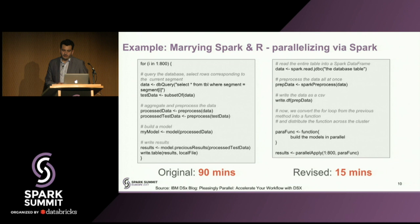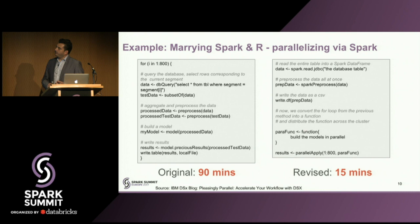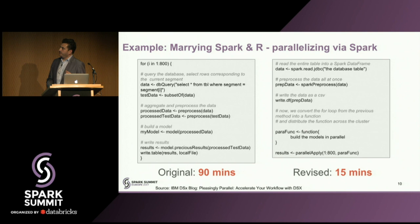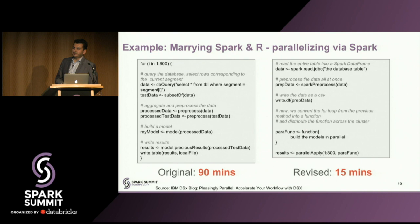I'll walk you through an example we did for a customer — we actually have this as a blog post, so it'll be published today and you can check out the sample notebook. This is a large retailer, hundreds of stores, millions of customers. They segment their customer base into several hundred segments, and for each segment they want to create or update a behavioral model — this person likely to come back, this person likely to buy things. They do that in a giant for loop in R: query the transactional data one query per segment, extract the data, preprocess it, create a model, and save the model data. That took 90 minutes.